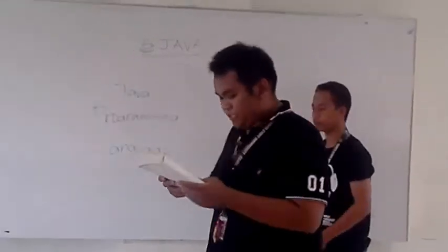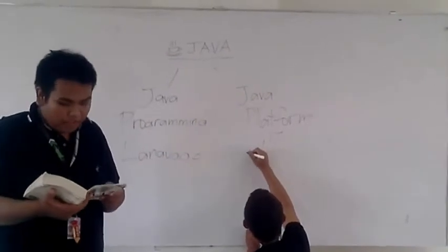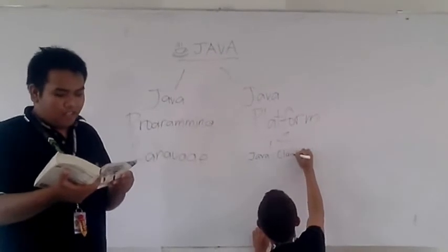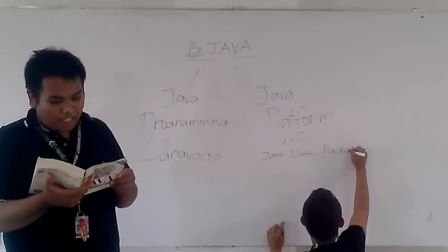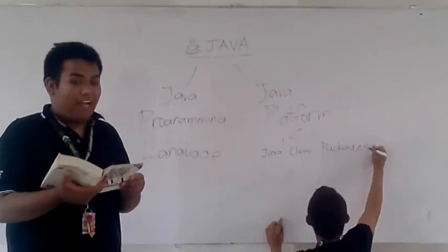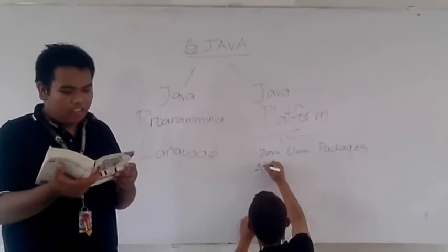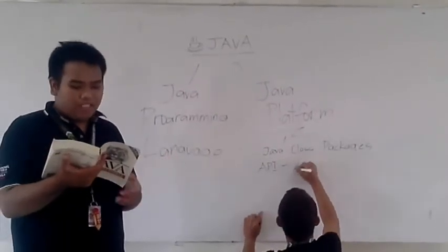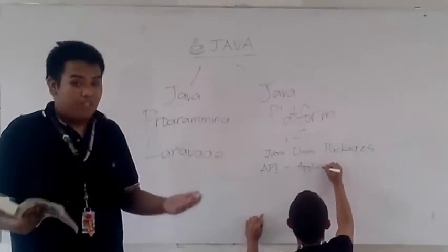Second, the Java platform. The Java platform is just as important as the Java programming language. All programs written in the Java language rely on a set of ready-made classes that comprise the Java platform. Java classes are organized into related groups known as packages. The Java platform defines packages for functionality such as input, output, networking, graphics, user interface creation, security, and much more.